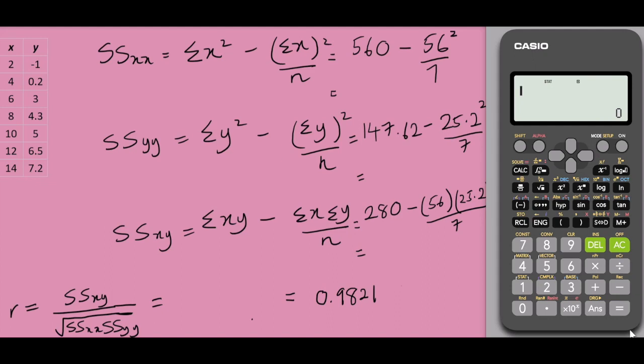To calculate the sum of squares of xx, we simply take 560 minus bracket 56 square divided by 7 and we have 112.